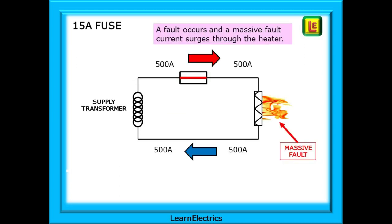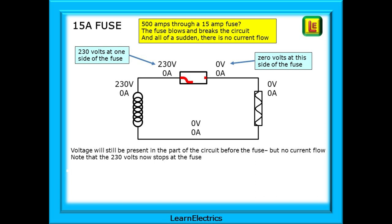Let's say a fault occurs and a massive fault current surges through the water heater. Our 15 amp water heater is suddenly drawing 500 amps or more. What happens to the circuit? How does the protective device protect things? For tiny fractions of a second, 500 amps flows through the circuit. But 500 amps through a 15 amp fuse — it just isn't going to work. The fuse blows in thousandths of a second and breaks the circuit, and all of a sudden there's no current flow. The fusible link inside the fuse has melted and now there's a gap, a break in the circuit that prevents current flow. A 500 amp fault current through a 15 amp fuse is going to blow almost instantly, protecting people, animals and property.